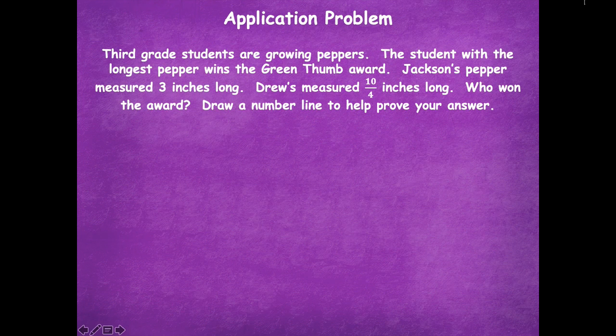So we're going to start with our application problem today. It says third grade students are growing peppers. The student with the longest pepper wins the green thumb award. Jackson's pepper measured three inches long. Drew's measured ten-fourths inches long. Who won the award?